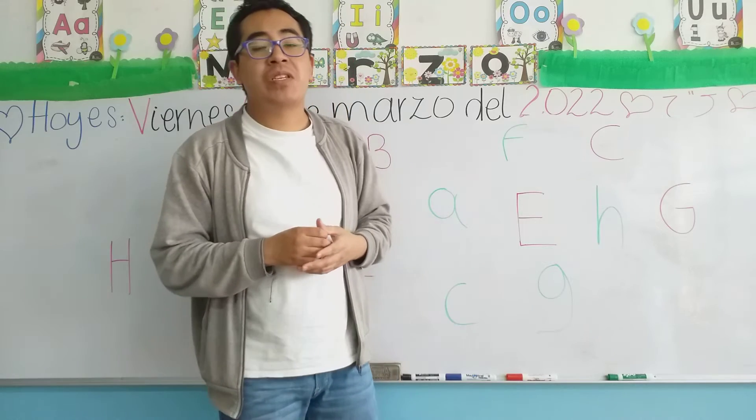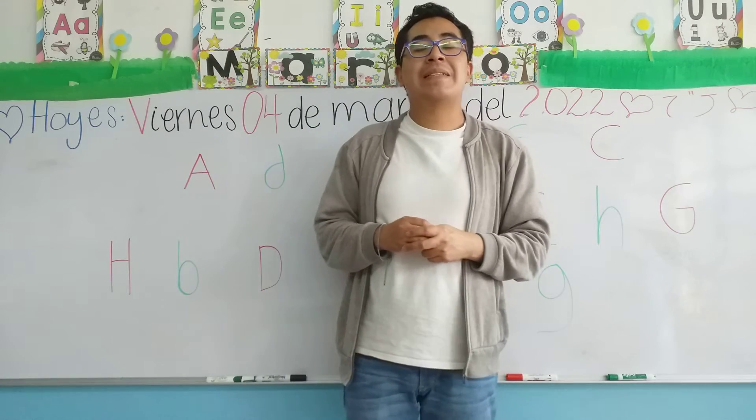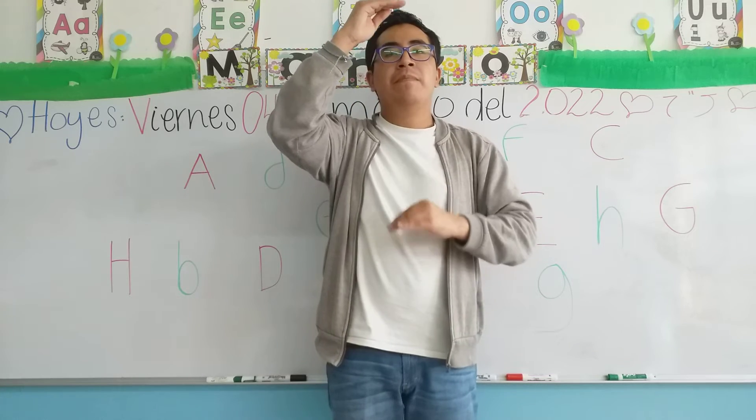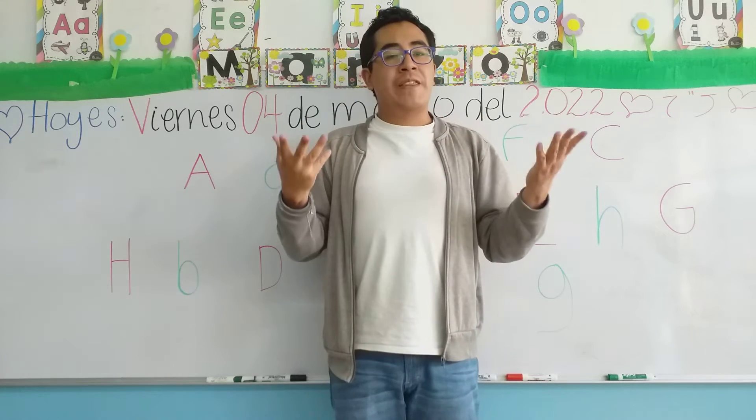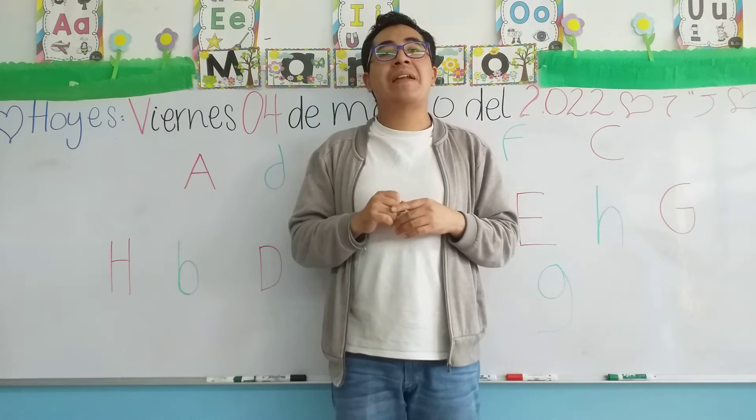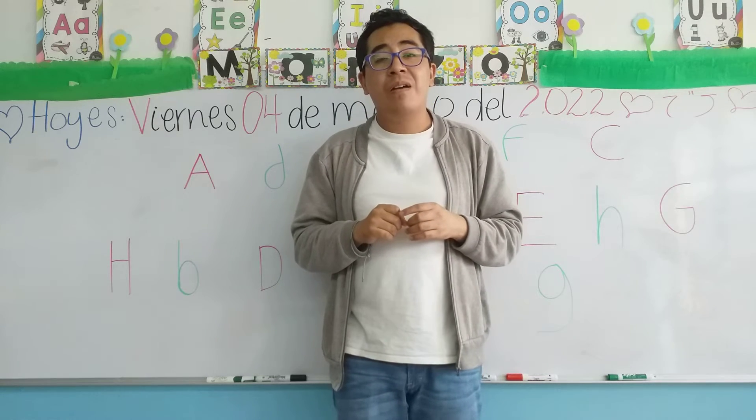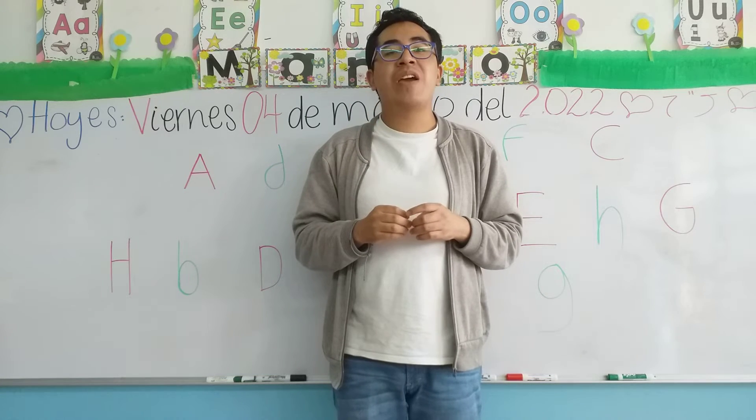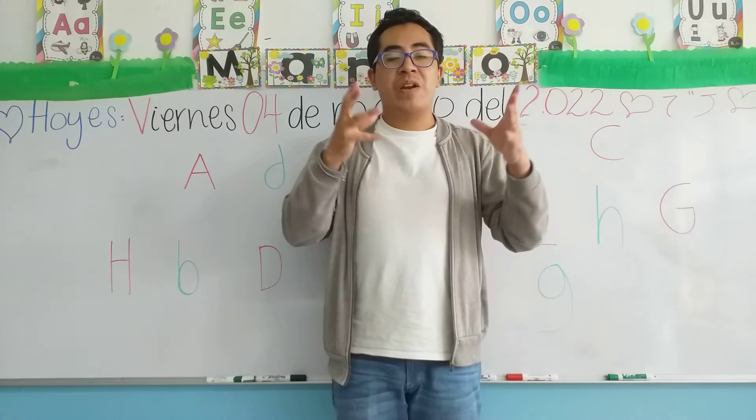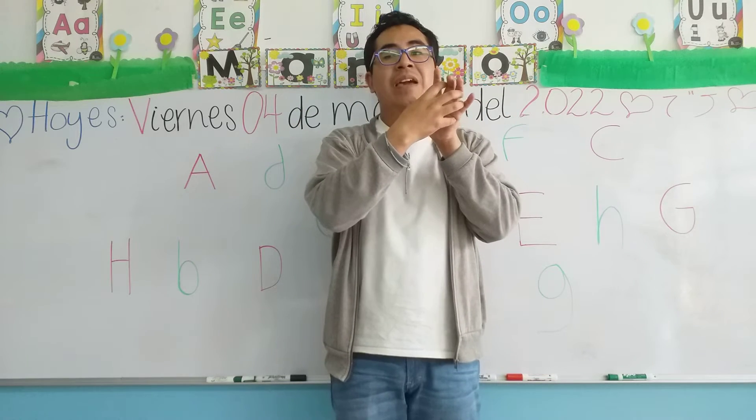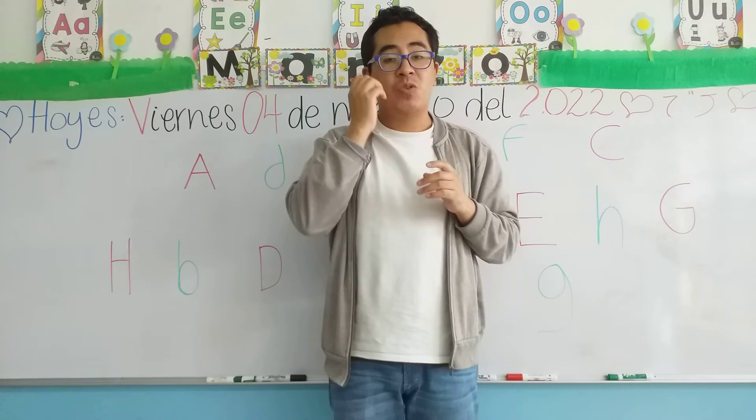Para el día de hoy chicos, vamos a seguir trabajando con las letras del abecedario en su forma mayúscula y minúscula. Recuerden que el día de ayer nosotros ya empezamos a trabajar con la nueva letra, la capital R. Si ustedes recuerdan, uno de los objetos que vimos fue radio. Recuerden que un radio tiene una forma rectangular con una bocina que nos sirve para escuchar música.